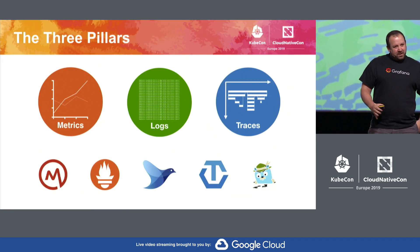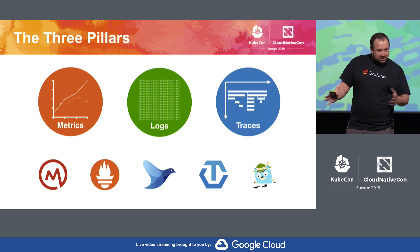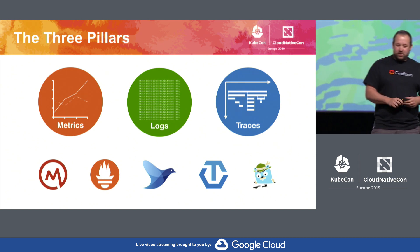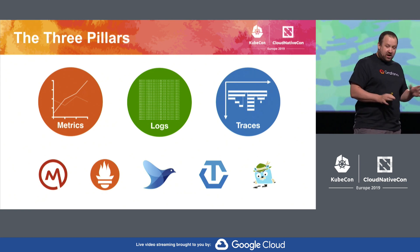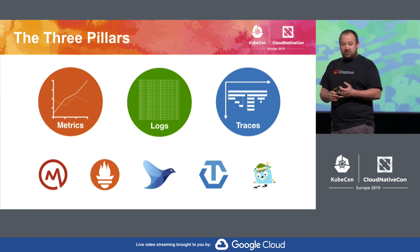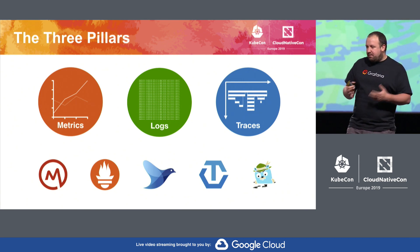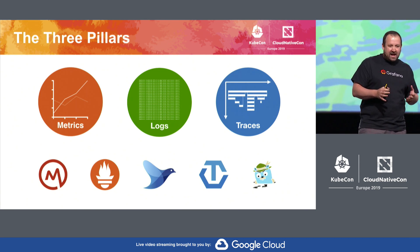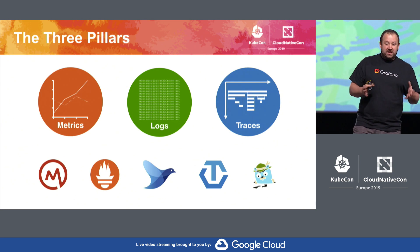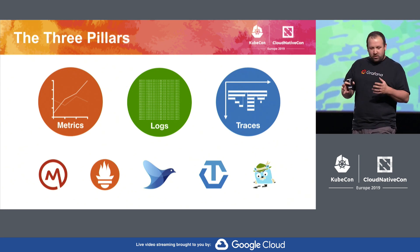Hopefully everyone here is familiar with the term observability. Observability can normally be defined as these kind of three pillars: metrics, logs and traces. This is a mental model for people who are maybe new to the space, helping them get a handle on what they need to do and what they need to implement. I'm just going to give you a quick overview of what they are and the projects in this space.